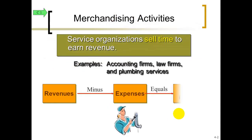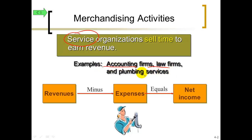Here's what we've been doing in past chapters: we've been looking at a service type business where you're selling your labor — accountants selling their accounting services, lawyers selling their legal services, plumbers selling their plumbing services. They're selling their employees' labor or their own labor, and we've been collecting or earning fees and incurring expenses. Hopefully you have more revenue than expenses, so the difference is equal to our net income, our bottom line.